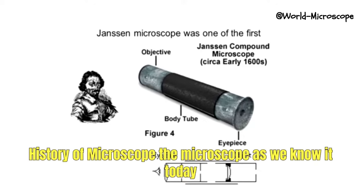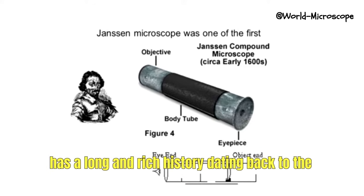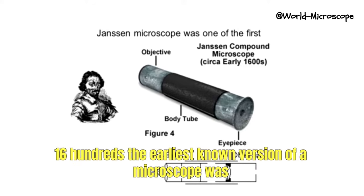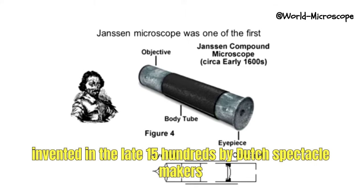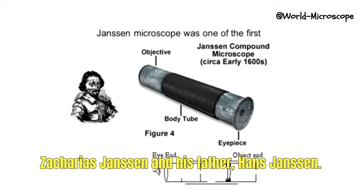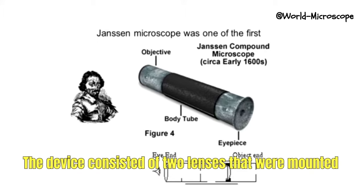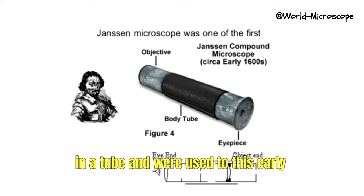The history of the microscope as we know it today has a long and rich history dating back to the 1600s. The earliest known version of a microscope was invented in the late 1500s by Dutch spectacle makers Zacharias Jansen and his father Hans Jansen. The device consisted of two lenses that were mounted in a tube.